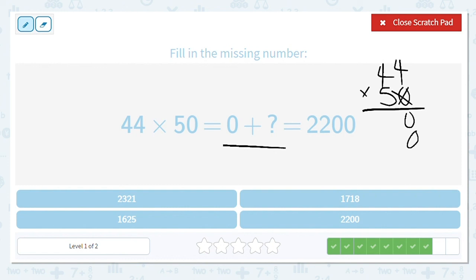All right, let's do it. 5 times 4 is 20. Put down the 0, carry the 2. 5 times 4 again is 20, plus 2 more is 22. So our second partial product that we can check by adding them is 2,200.